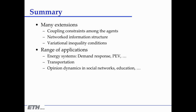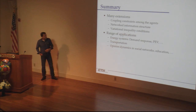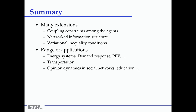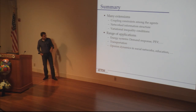It turns out the best way to handle these is using variational inequalities, which give convergence theorems under much weaker conditions. Coupling constraints and network information structures can all be addressed in the variational inequality framework. We've looked at a number of applications — energy systems demand response and plug-in electric vehicles are two examples — as well as transportation, which is much harder and we're still working on, and opinion dynamics in social networks.